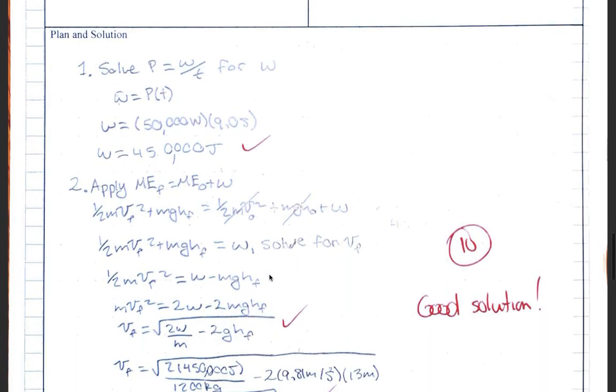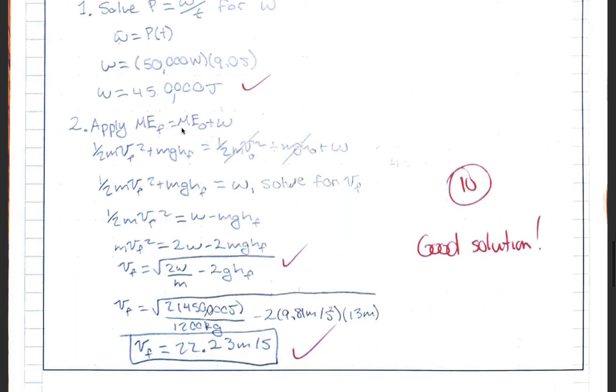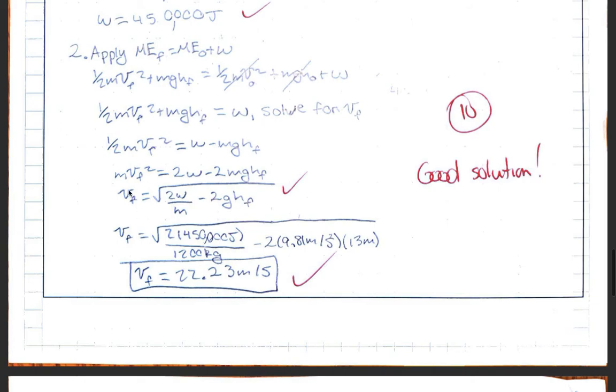Then once you know the work, you can apply the work energy theorem. The work is not zero. We just found it. So you're going to try to solve this equation for v final, the velocity at the top of the hill. When you plug in everything, you get an expression that looks like this. My only quibble with this is they need to show grouping with the radicals, and maybe make that a little deeper. Plug in your numbers, and you get about 22.23 meters per second as the final velocity.